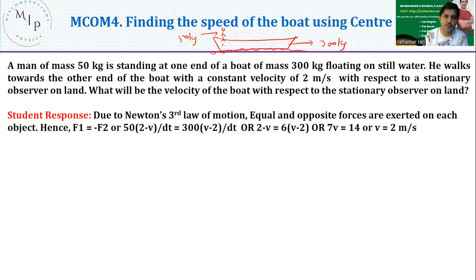He walks towards the other end of the boat, so he starts walking like this with a constant velocity of 2 m per second. With respect to the stationary observer on land. So for example, I am standing on the land and I am seeing, oh yeah, this fellow is walking at 2 m per second. What would be the velocity of the boat with respect to the stationary observer on land?